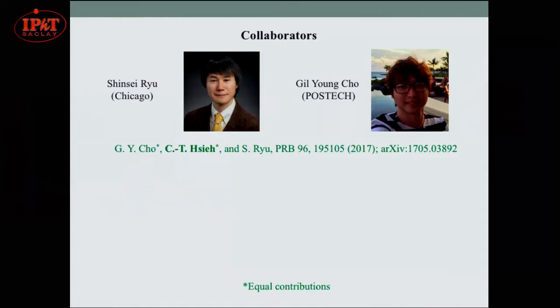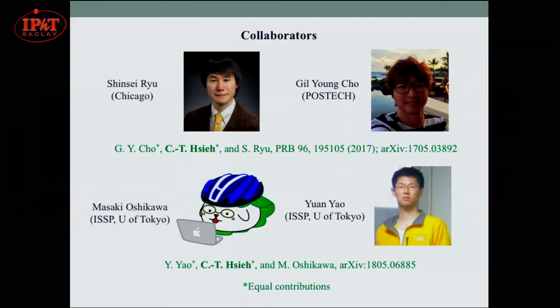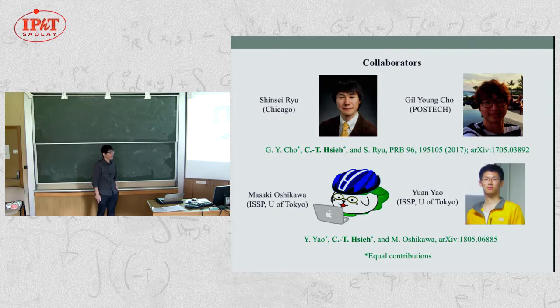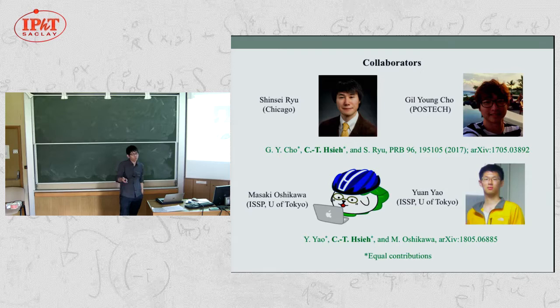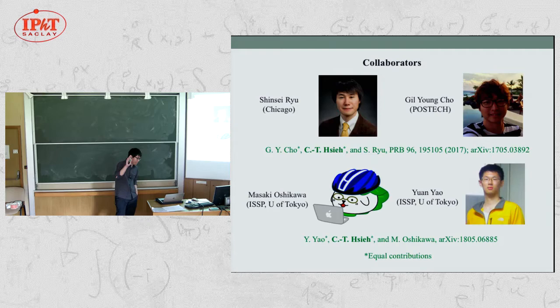The second part of this talk is based on our recent work with Masaki and his student Yuan. While the first work is about electron systems — more generally fermion systems — the second work is about spin systems, or more generally SU(N) spin systems in one dimension. The second paper was just posted online last month.